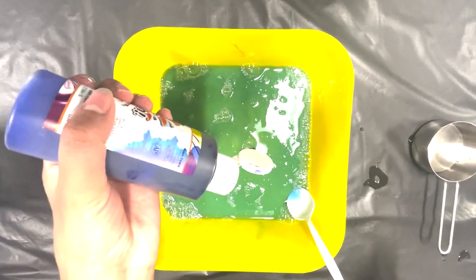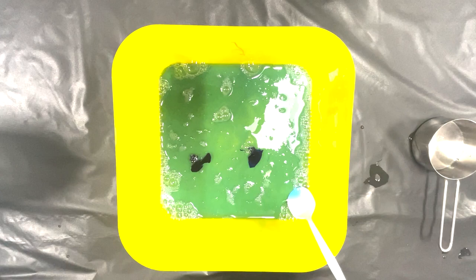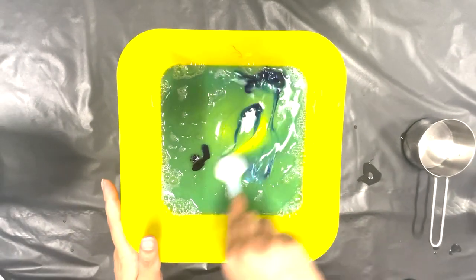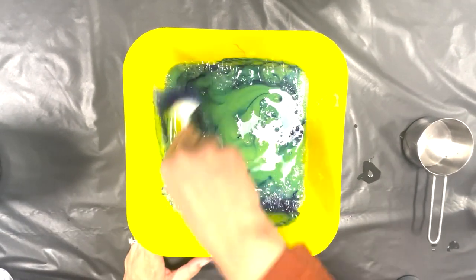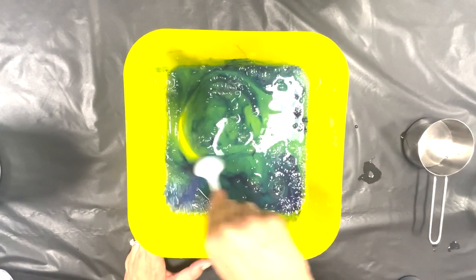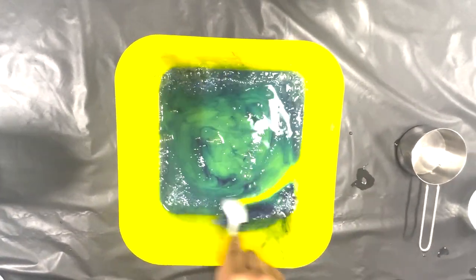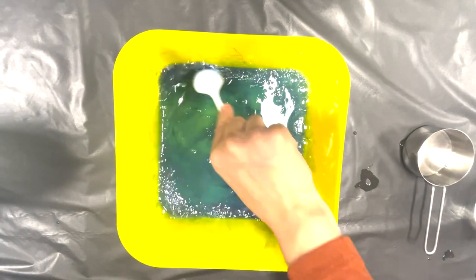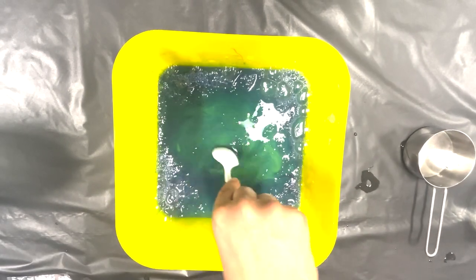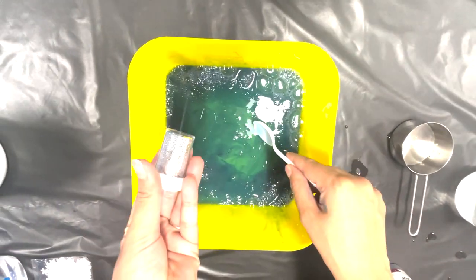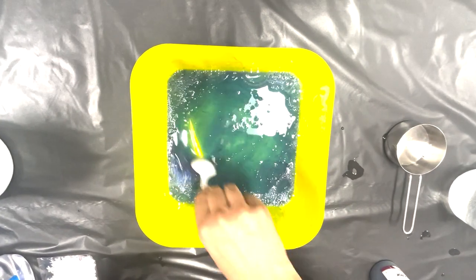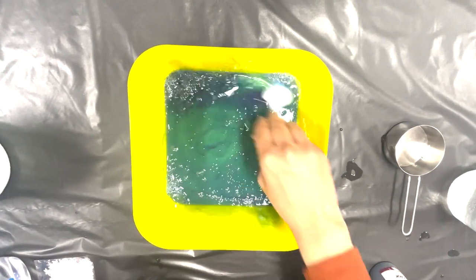And we're going to keep mixing it all together and we're going to actually add a little bit more. So we're going to add some glitter. I'm going to use silver glitter and add it into our mixture. You can use glitter if you like too but you don't have to.